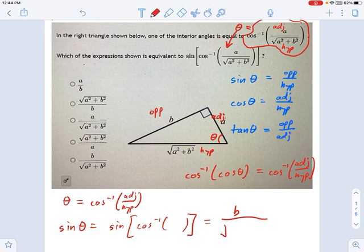b over the hypotenuse. We already talked about the hypotenuse. That's the square root deal. Square root of a squared plus b squared. And if we look on our list, there it is.